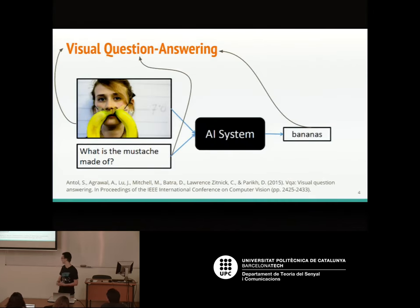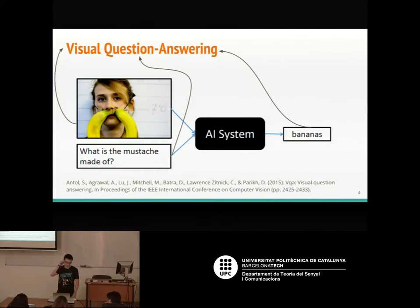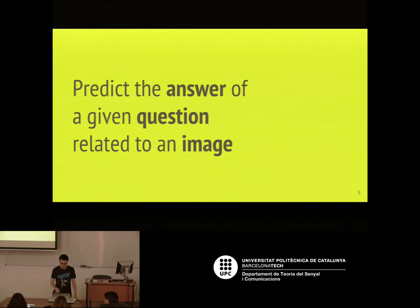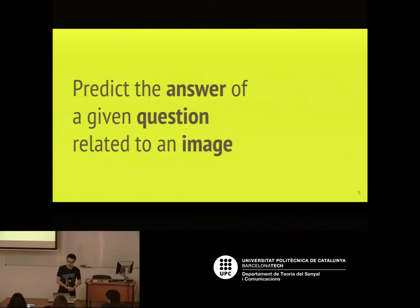First of all, what is visual question answering? Visual question answering aims to build a model or an artificial intelligence system that, given two inputs — an image and a question — its output is the answer to that question. I want to highlight this because it is one of the main goals of this project. Our goal is to create a model that is able to predict the answer to a given question related to an image.